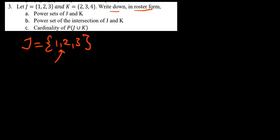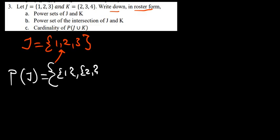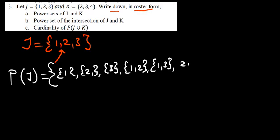So let's get all the subsets from this set. We're going to say the power set of J is equals to — and then we list all the subsets. So the first one will just have 1, the second one will just have 2, the third one will just have 3. Then another one will be a combination of 1 and 2, another will be 1 and 3, and then the combination 2 and 3. And then we have the set itself: 1, 2, 3, and then we have the empty set.